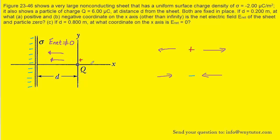Let's consider the space on the right side of the charged particle. The positive charge would produce an electric field pointing away from it, which would be to the right. The negatively charged sheet would produce an electric field pointing towards it, which would be to the left. Those two vectors point in opposite directions, so they could cancel each other out, and it is possible for the net electric field to equal zero on the right side of the charged particle.